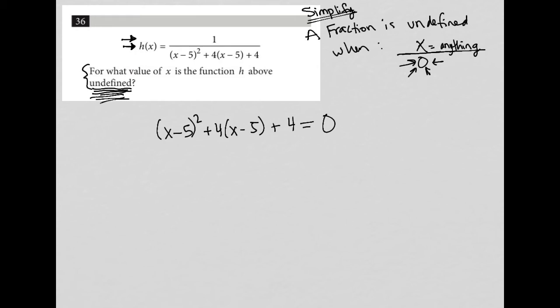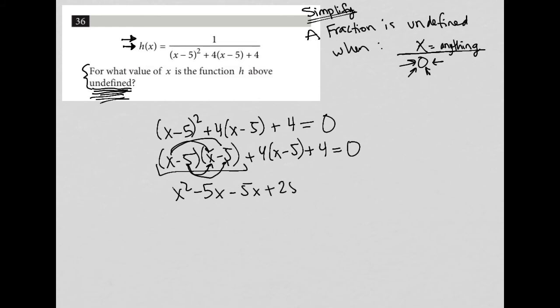So I'm going to simplify this by first of all, expanding this x minus five. And I'll just write all the steps out for you so I'm not skipping anything so you can see all of my math. So I'm going to FOIL this here. So I get x times x, which is x squared, and then x times negative five, which is minus five x, then negative five times x, which is another minus five x, and negative five times negative five, which is a positive 25.